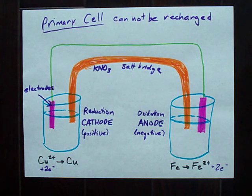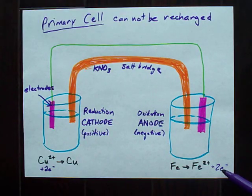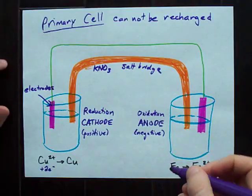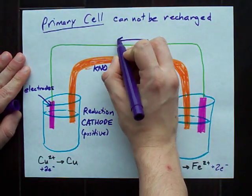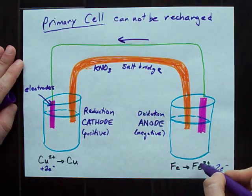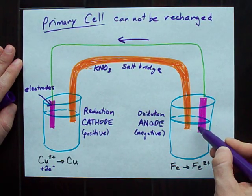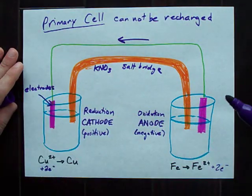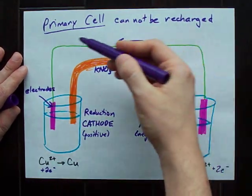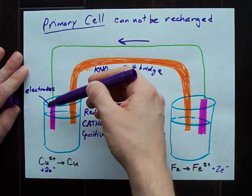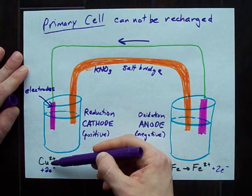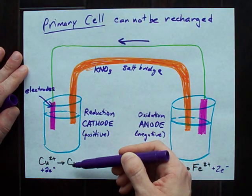The last point to recognize is that if this side is losing its electrons and this side is gaining electrons, that means through the wire the electrons have to be traveling this way. Every time an iron dissolves into solution to make an iron 2 plus, we generate two electrons and they have to go somewhere. They go through the wire to here, because every time two electrons arrive here, we're able to reduce a Cu2+ ion into a solid copper ion.